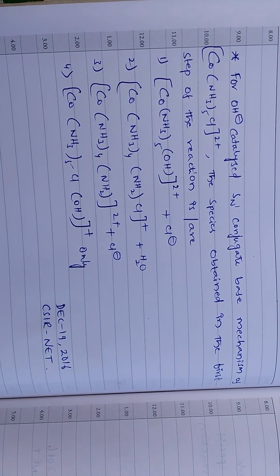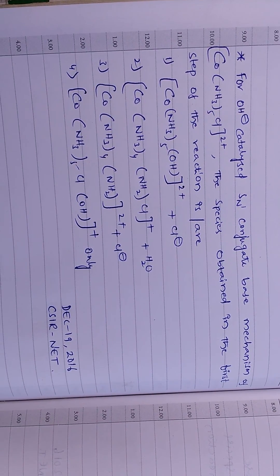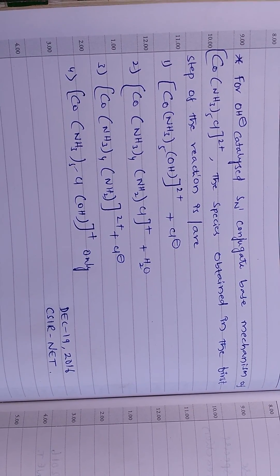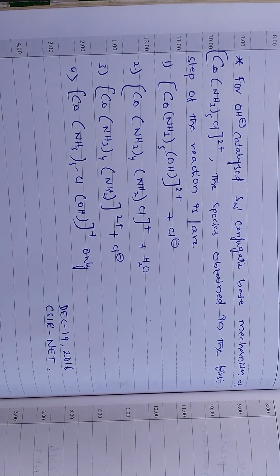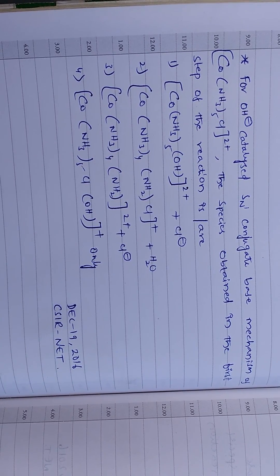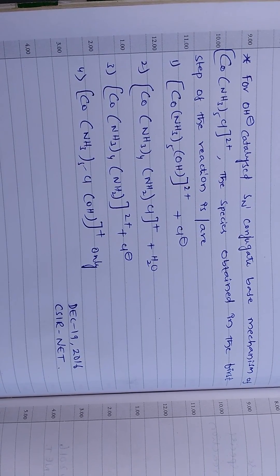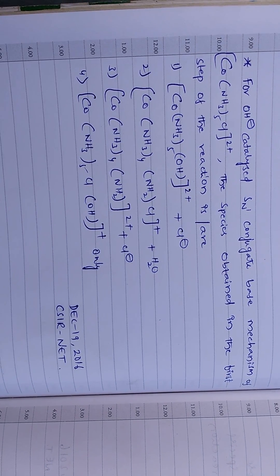The first option is Co(NH3)5OH2 plus plus Cl minus. The second option is Co(NH3)4NH2Cl plus plus H2O. Third option, Co(NH3)4NH2 2 plus plus Cl minus. And the fourth option is Co(NH3)5ClOH plus only.